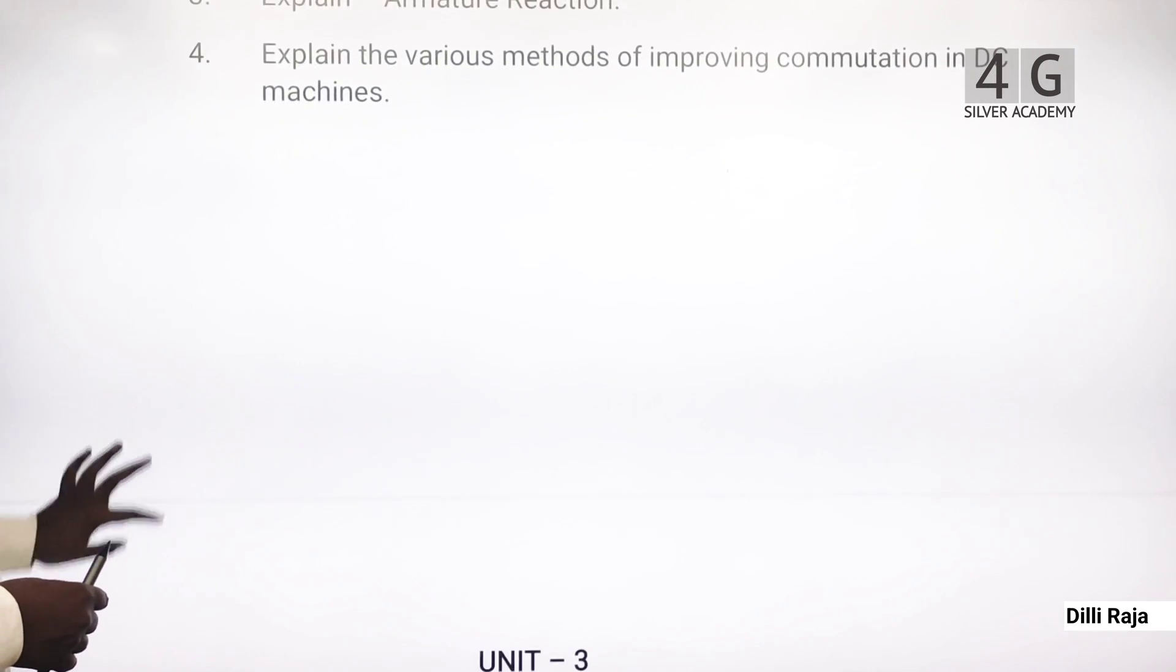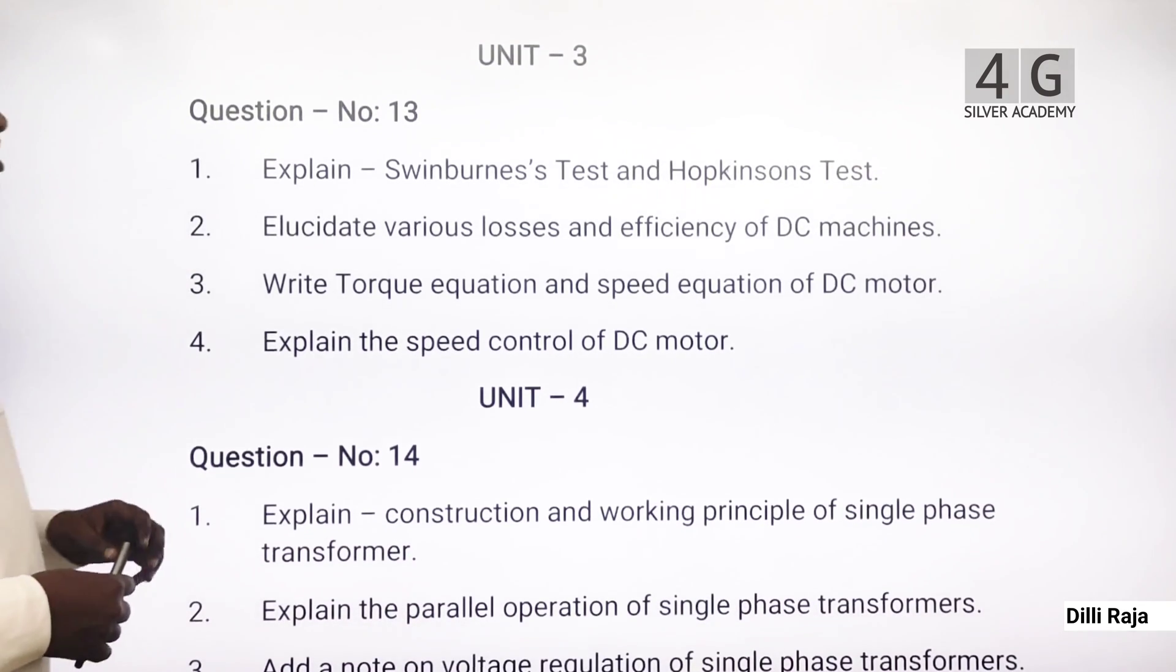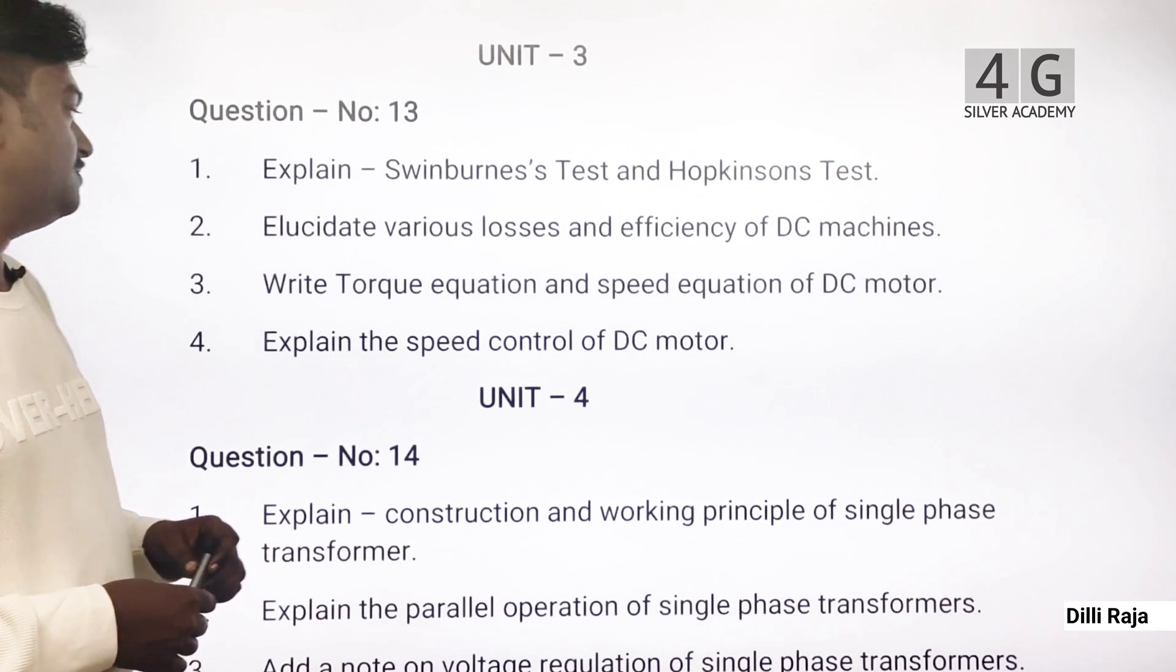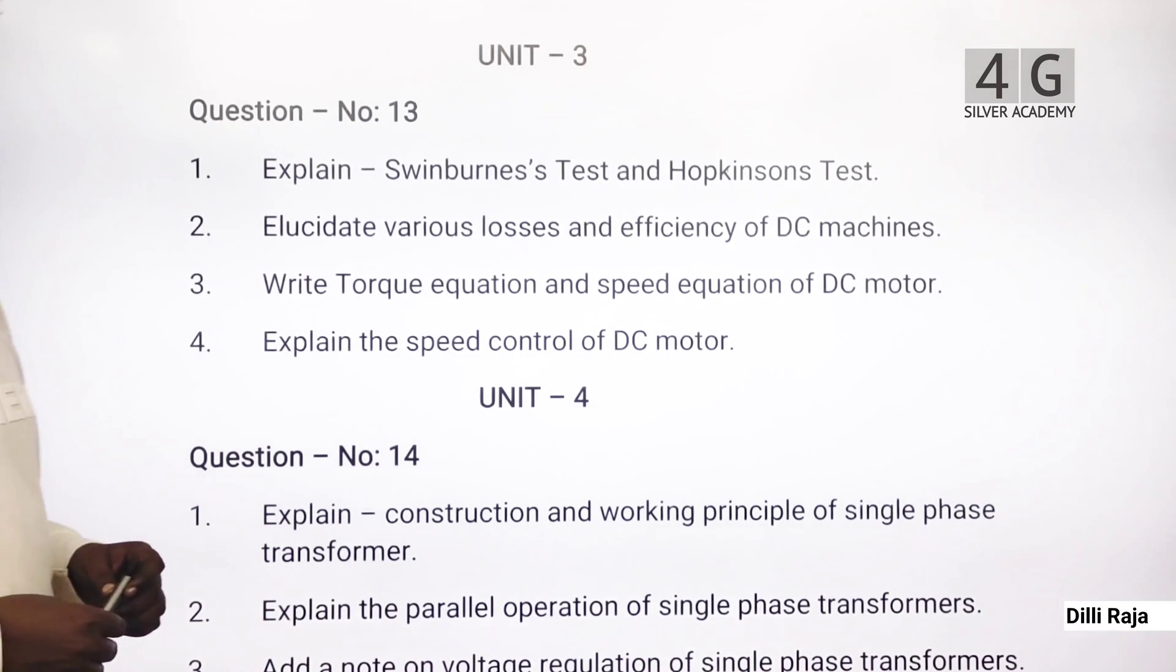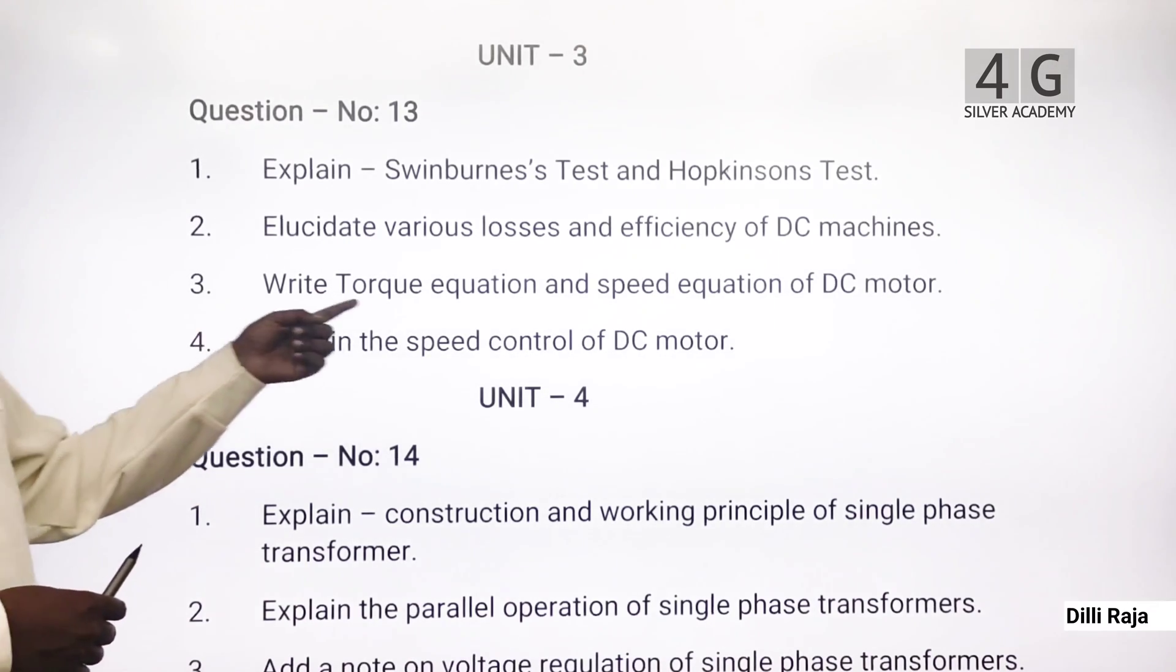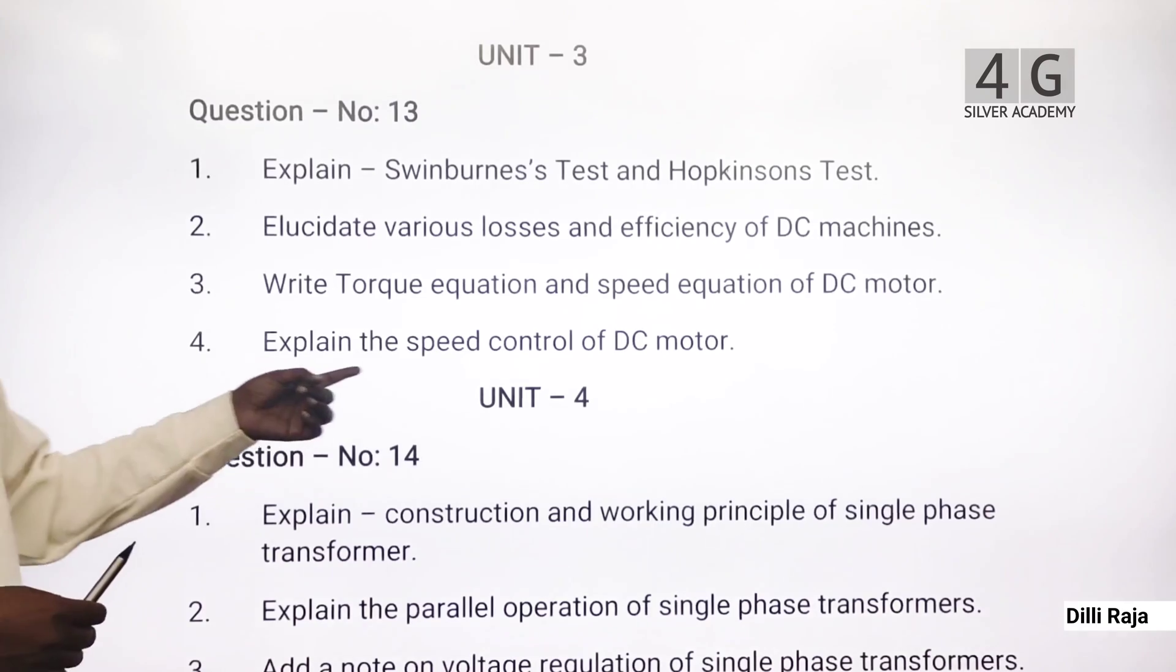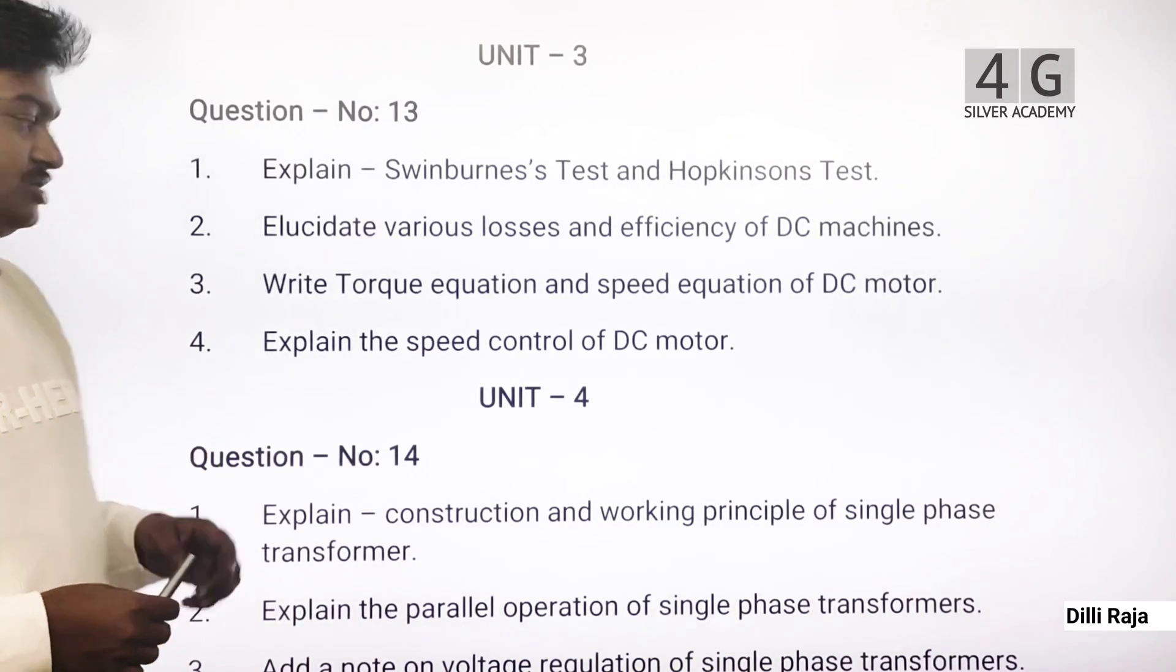Next, Question Number 13 for Unit 3. Topics include: Explain Swinburne's test and Hopkinson's test. Elucidate various losses and efficiency of DC machines. Write torque equation and speed equation of DC motor. Explain the speed control of DC motor.